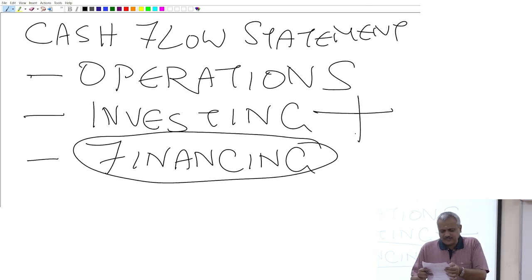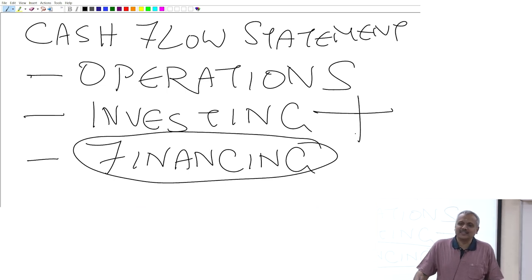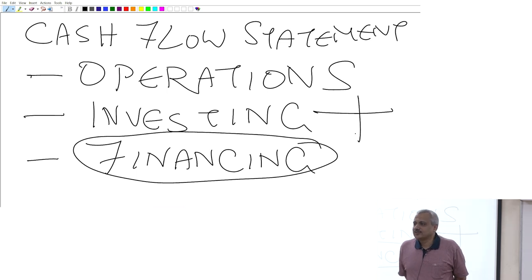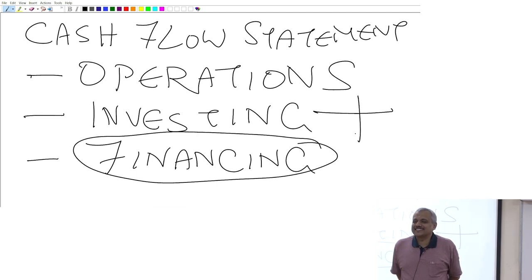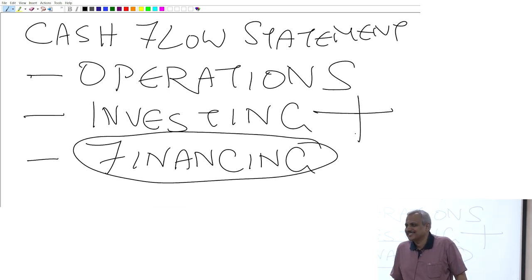Just read the first line: sales 30,650. Is that a cash inflow or a cash outflow? Cash inflow — but are you sure? How do you know it is all cash sales? Where is it mentioned it is cash sales? Maybe all of it is credit sales and may still be due.